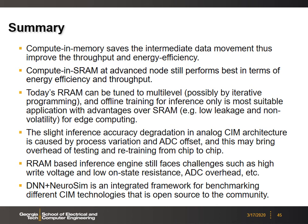In summary: computing-in-memory saves intermediate data movements, improving throughput and energy efficiency. Computing in SRAM at advanced technology nodes still performs best. Today's emerging memory like RRAM can support multi-level programming with iterative write-verify. Offline training for inference is the most suitable application for non-volatile CIM, with the advantage of dynamic power gating for edge devices. However, inference accuracy degradation caused by ADC offset process variation remains the key challenge, potentially bringing overhead of testing and chip-to-chip retraining. The inference engine also faces challenges of high write voltage, low on-state resistance, and ADC overhead.